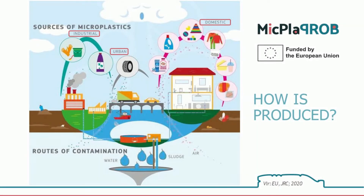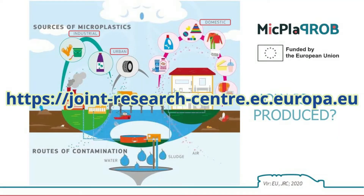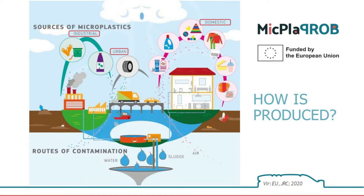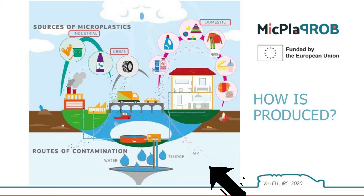The Joint Research Center, which operates within the European Union, created a general scheme in 2020 that shows us where the sources of microplastics are in our environment. They defined three significant sources: industry, urban environments, and households. The routes through which microplastics can burden the environment may be via different water sources — sanitary wastewater, standing surface water — and consequently the soil and air.